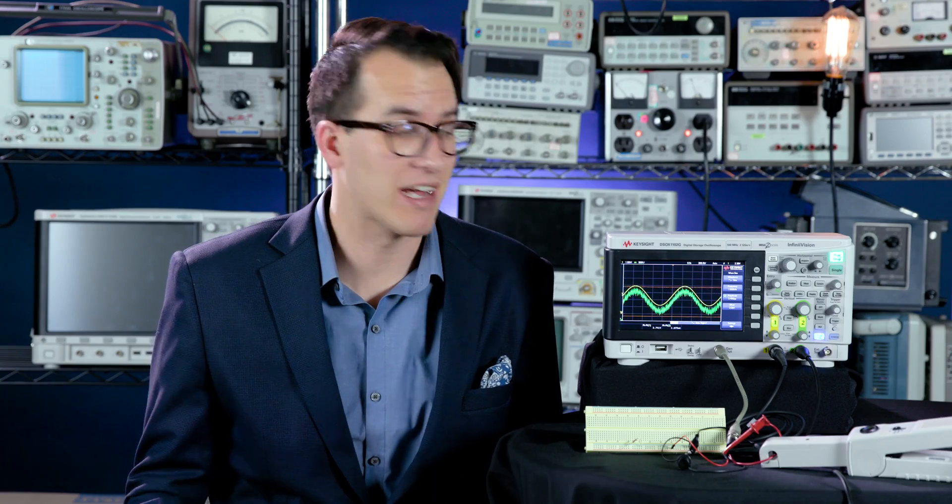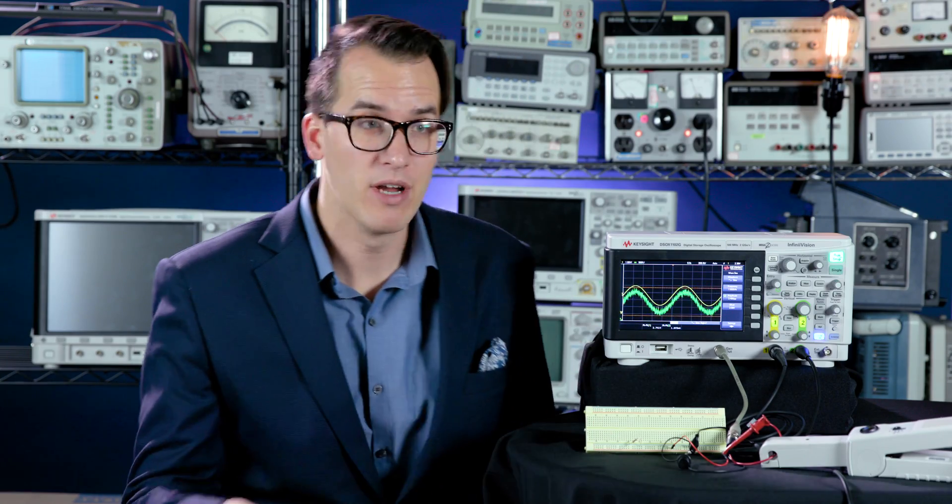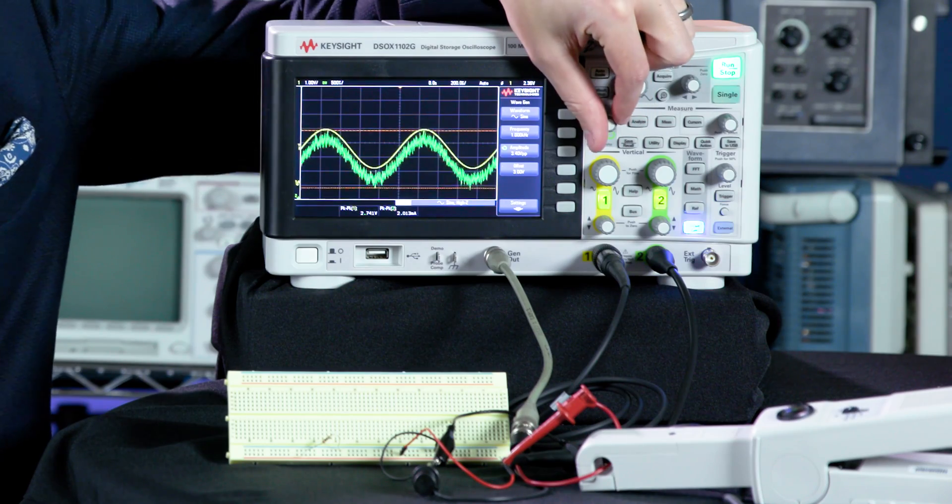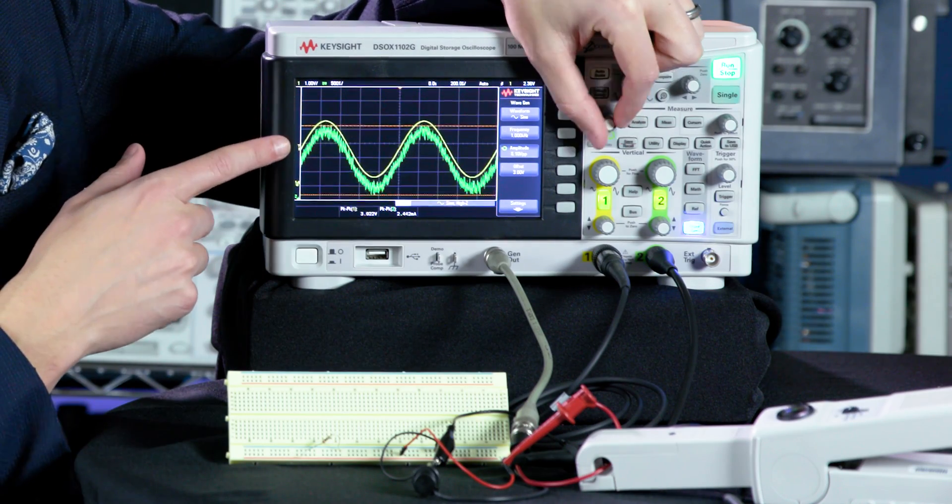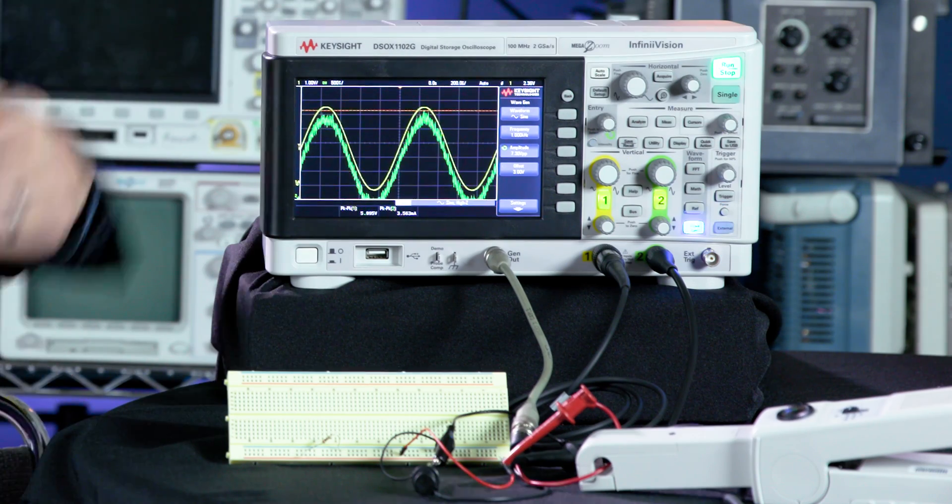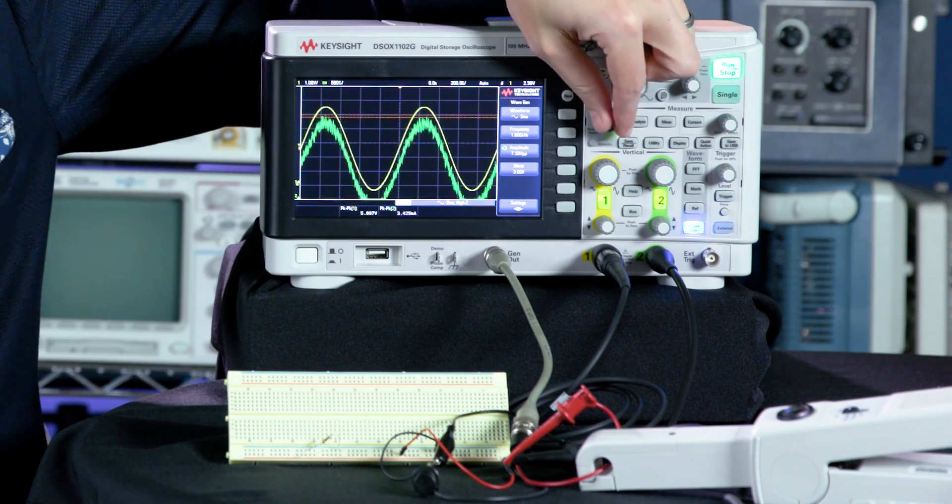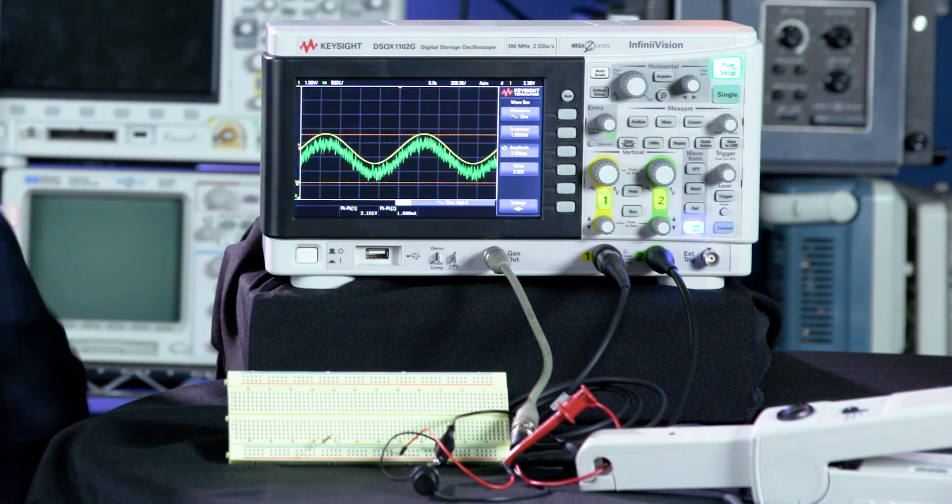So I have a very simple circuit set up with my wave gen and a resistor, and we can see that if I increase the voltage, which is channel one, then my current is also going to increase, which is channel two. And likewise, if I decrease the voltage, my current is going to decrease.